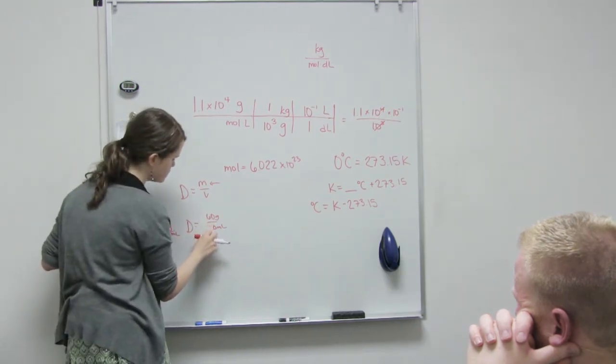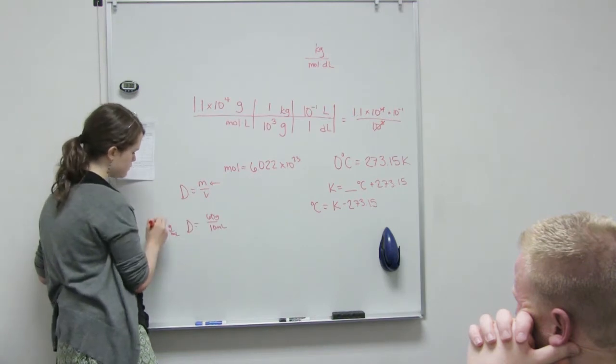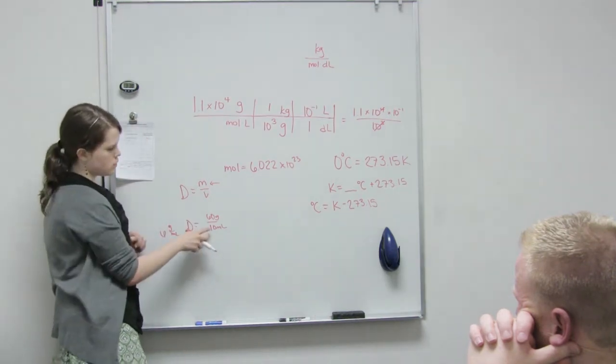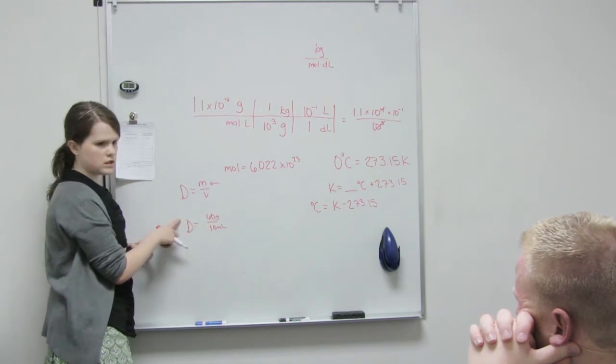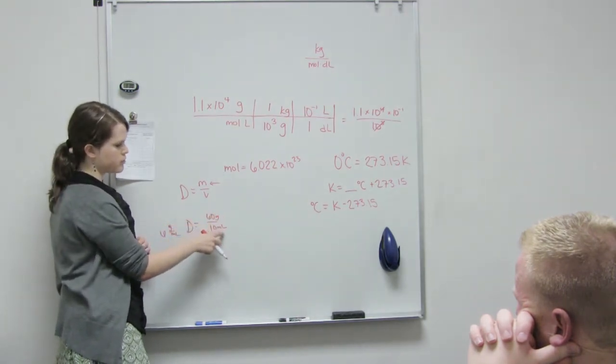how about if I made this smaller? Well, then I would get a bigger number, 6. So if volume gets smaller, density gets bigger, because there's more grams per milliliter.